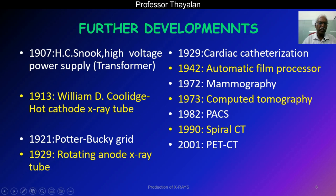Another important discovery is the 1921 Potter-Bucky grid in England. They devised a Bucky grid by which scattered radiation — which degrades image quality — can be removed. Now we use a moving grid, which is better than the original. Later, the development of the rotating anode X-ray tube in 1929 opened the door for use with high numbers of patients with much greater heat tolerance. This is why rotating anode X-ray tubes are nowadays used in mammography, cardiac catheterization labs, and CT scans.